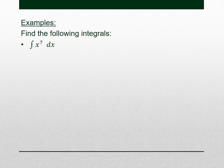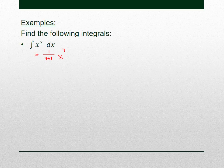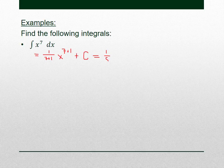Let's use our properties and common integrals to find more integrals. What about the integral of x^7? That looks like our x^n rule. When we take derivatives we subtract 1 and multiply it down, so to undo that we add 1 and divide. We get (1/8)·x^8 + C. That's the antiderivative of x^7.